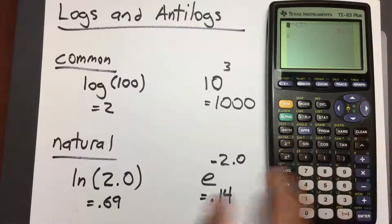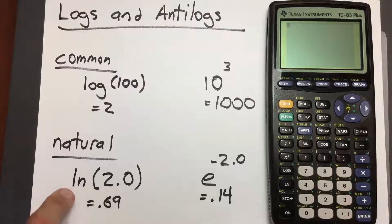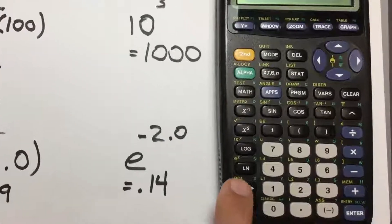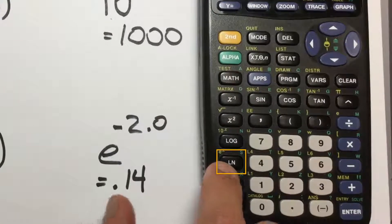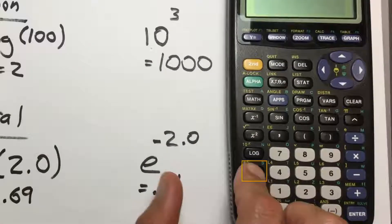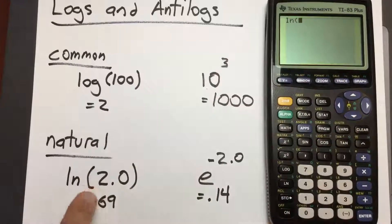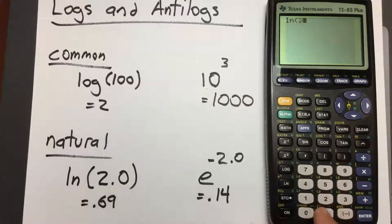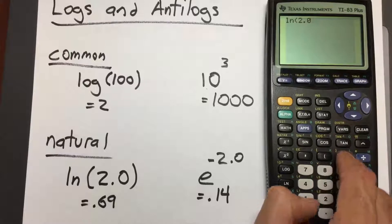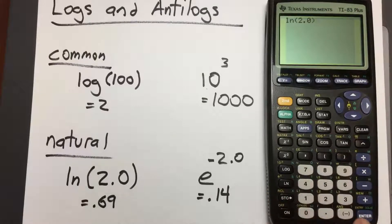Clear the screen. To do the natural log (LN), look for the button that says LN — that's here on the lower left. Press LN, which gives us an open parentheses. Enter the number 2.0, close the parentheses, and press enter. This gives us 0.693, which we round to 0.69.